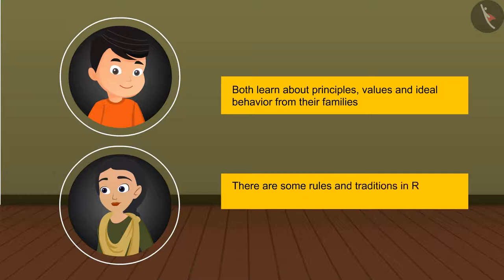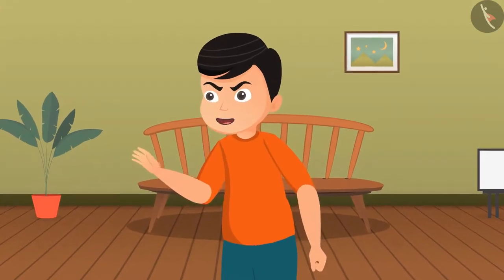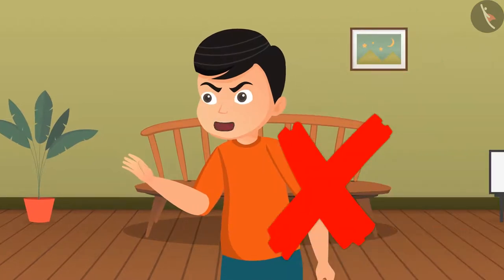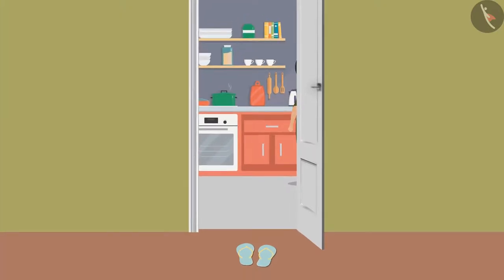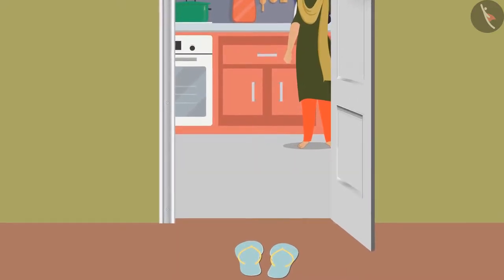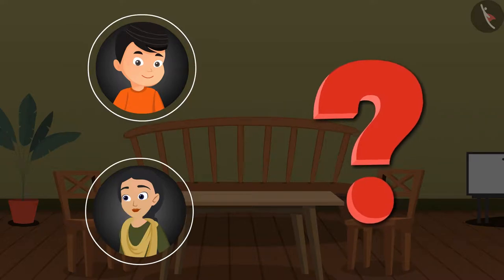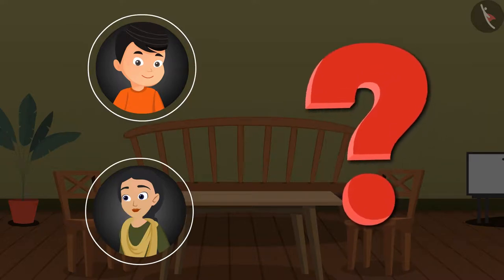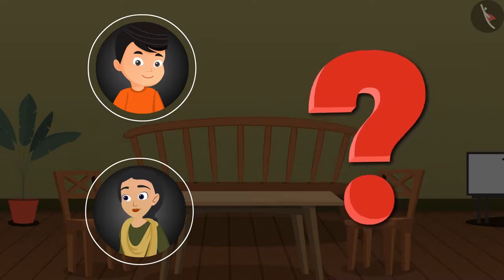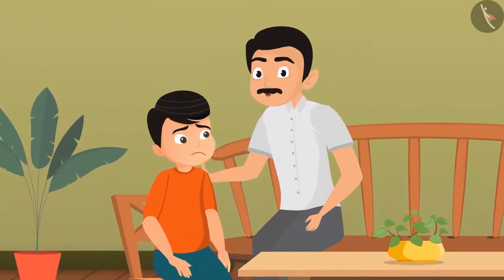There are some rules and traditions in Raju's and Pushpa's houses. In Raju's house, talking loudly is frowned upon. In Pushpa's house, no one is allowed to enter the kitchen with their footwear on. Are there any rules and traditions in your house? What are they? When Raju is upset, he consults his father.